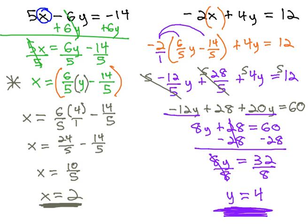And we found our x. We have our ordered pair solution, x comma y, 2 comma 4, solving by using the substitution method.